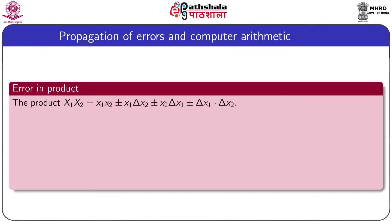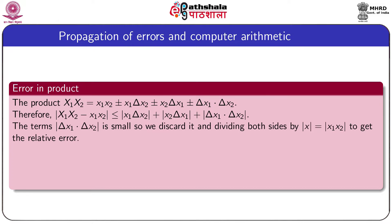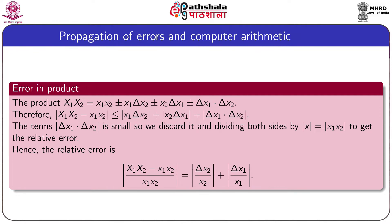Consider the product of two exact numbers X1 and X2. The absolute error of this product is less than or equal to |x1|·δx2 + |x2|·δx1 plus the product of the absolute errors. Since δx1 and δx2 are both very small quantities, we discard the higher-order term. Dividing by the approximate value x1·x2, the relative error in the product of two numbers equals the sum of the relative errors in the individual numbers.